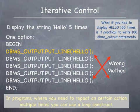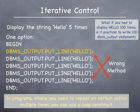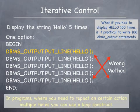Suppose you were to display the word hello on the screen five times. One option would be to write within the body of the program five DBMS output line statements that will all output the same string, which is hello, on the screen. Although this is one option, it's not a very practical option. What if you had to display the word hello 100 times? The action that had to be done was to display the word hello and it had to be done multiple times. In programs where you need to perform a certain action or actions multiple times, you can use a PL/SQL programming construct that is used for iterative control, such as a loop construct.